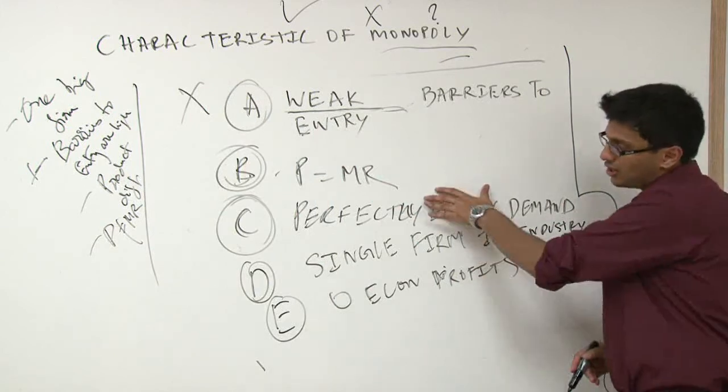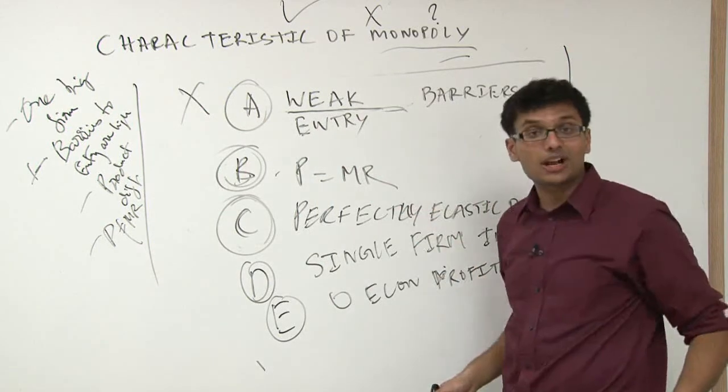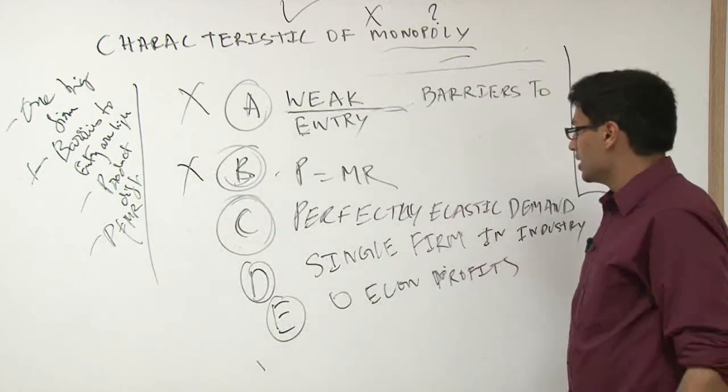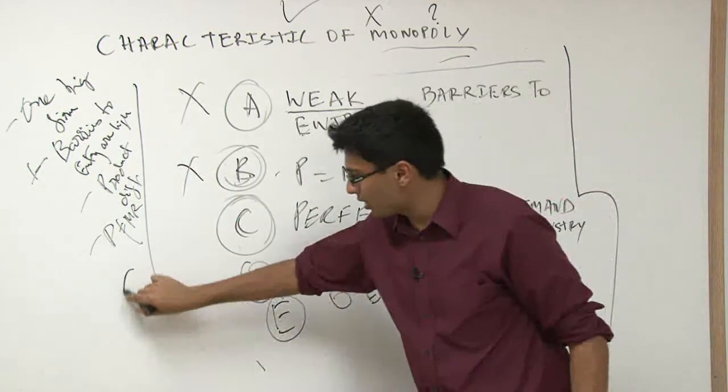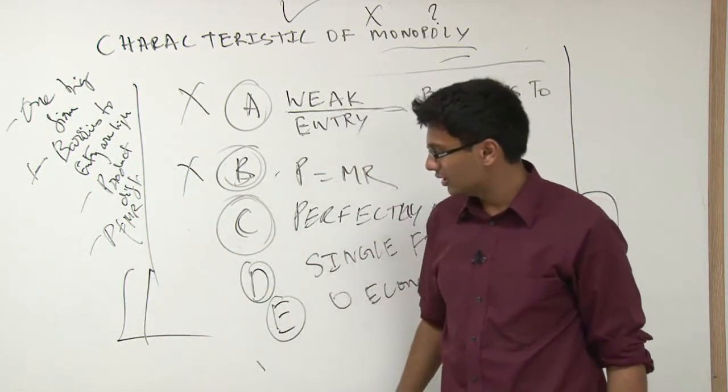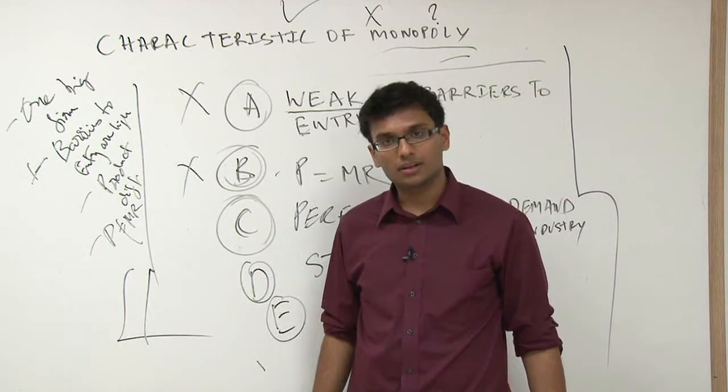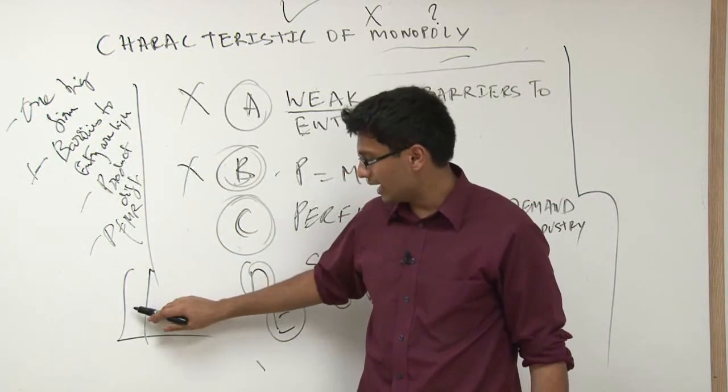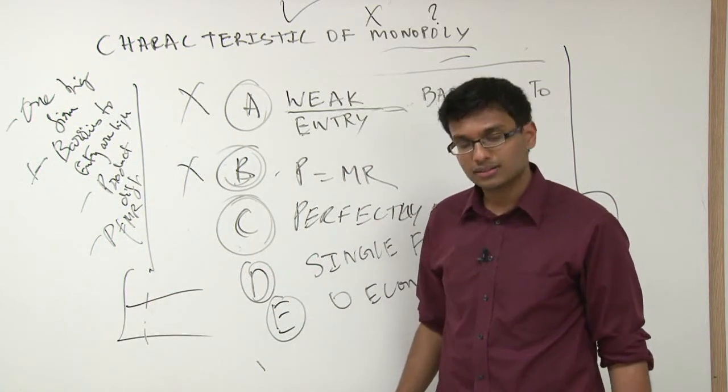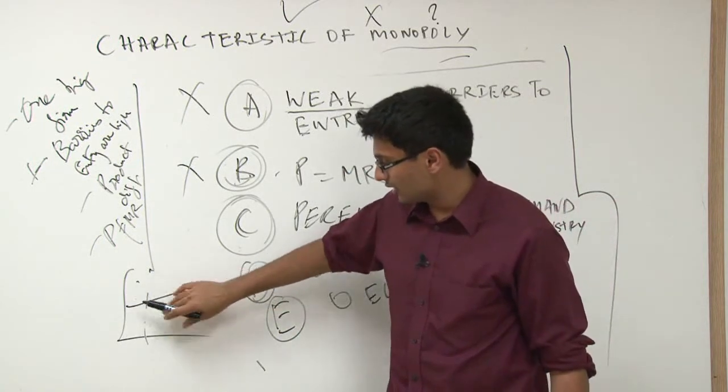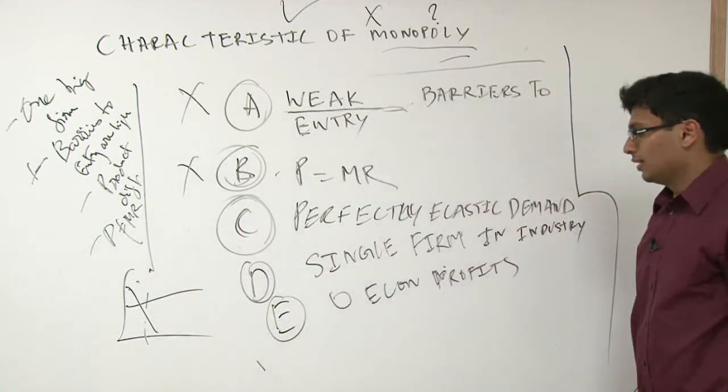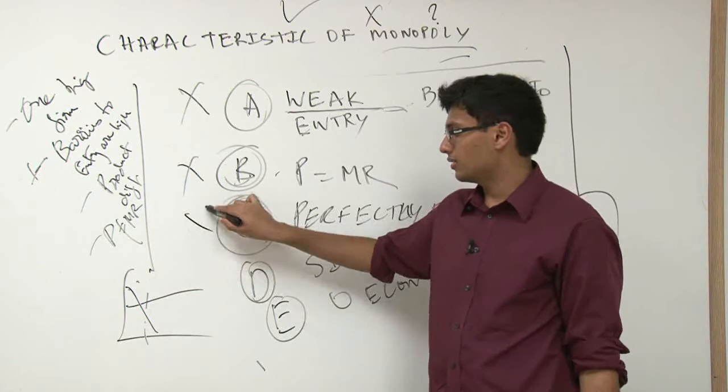P equals MR. Also, I know this is not true because P equals MR only in perfect competition. Perfectly elastic demand curve. Is that really right? I mean, when I draw a demand curve for MR, does it really look elastic? It sort of looks more inelastic. So I know that's not true. Perfectly demand curve, not true.